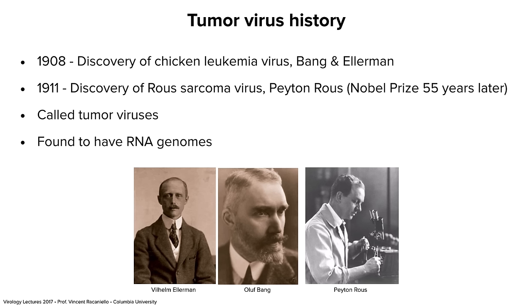It was caused by a virus. In 1911, Peyton Rous discovered Rous sarcoma virus, a virus that causes solid tumors — a sarcoma in chickens. He worked here at the Rockefeller Medical Institute, as it was called before Rockefeller University. He got the Nobel Prize 55 years later, the longest incubation period for a Nobel Prize ever, because people couldn't figure out this whole tumor thing. We're going to talk about this in a separate lecture — it is an amazing story.